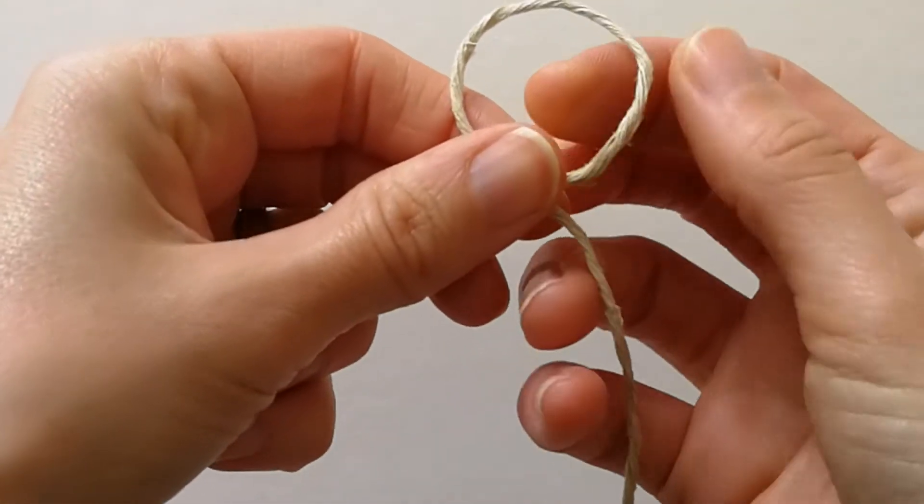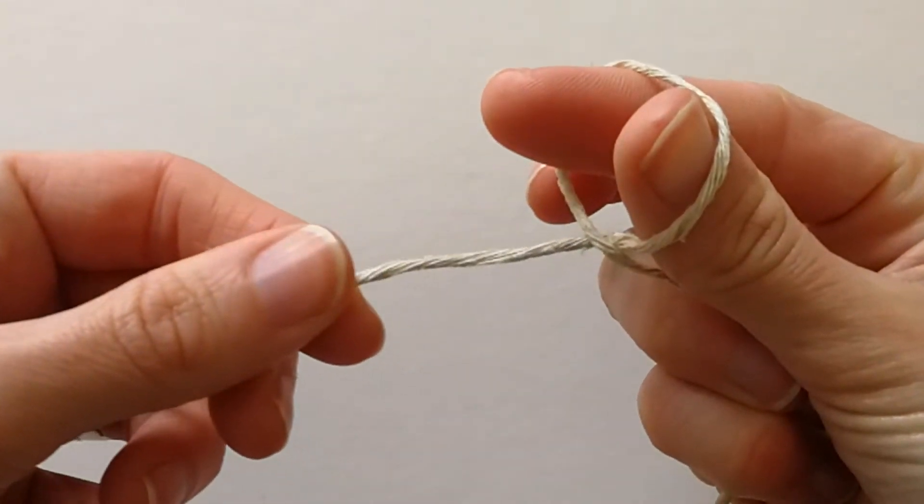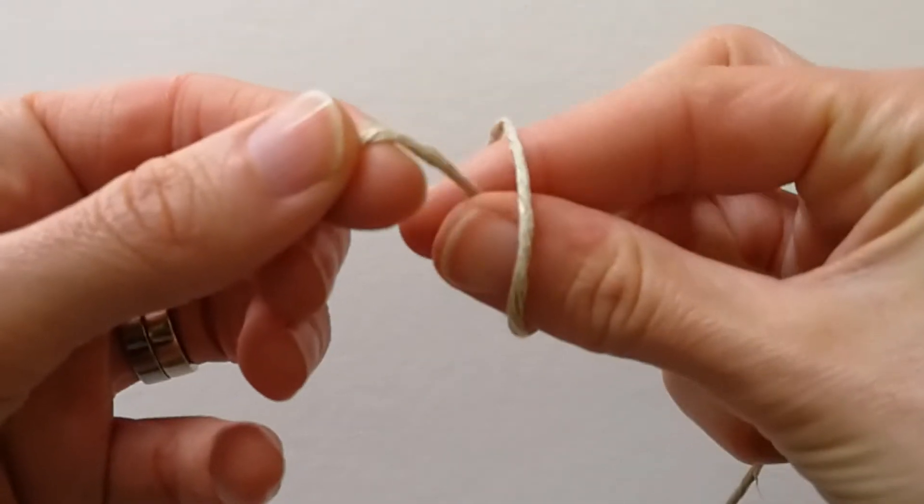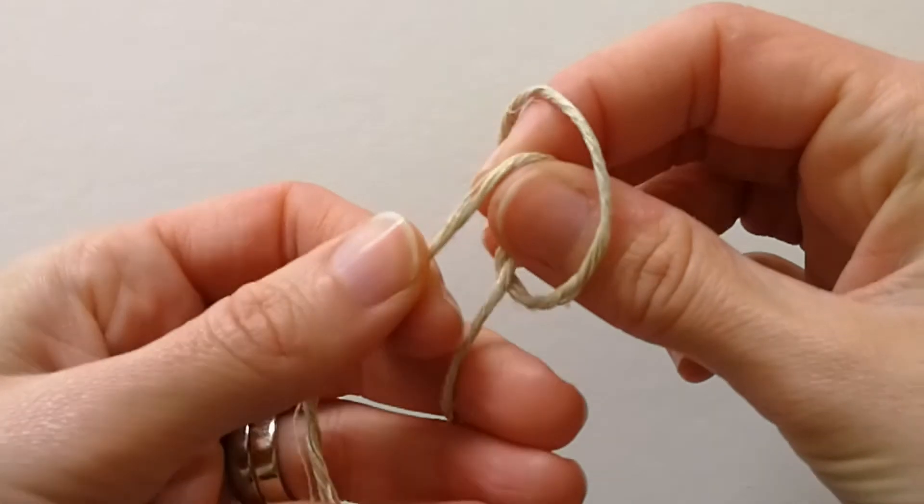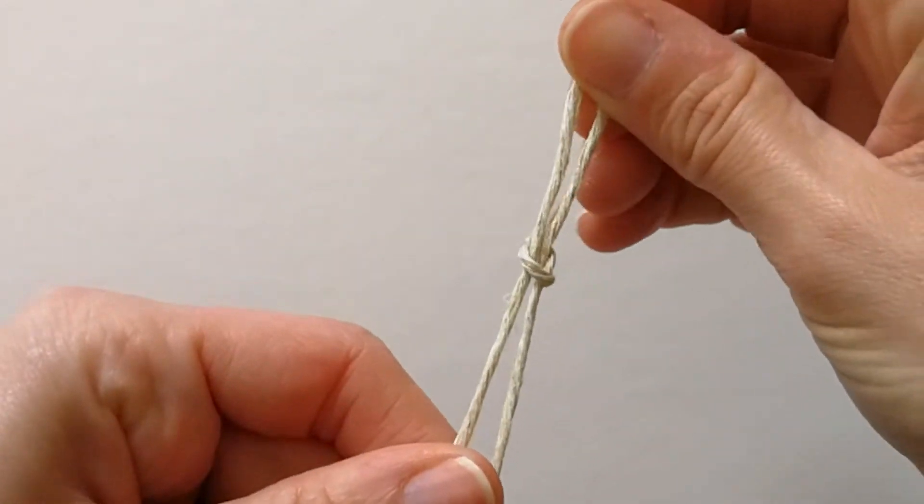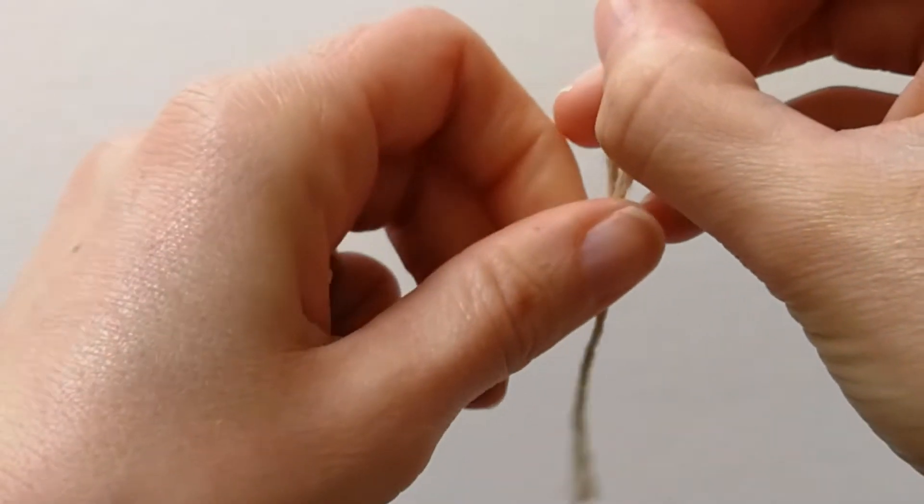Put your index finger and thumb through the loop from the back. Grab the left side with those fingers, hold on to both ends with your left hand and pull in both directions.